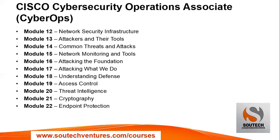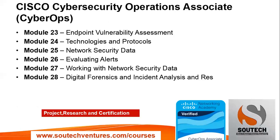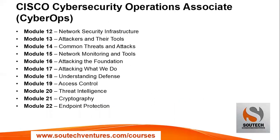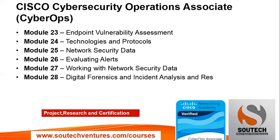Of course you have cryptography — we'll learn symmetric and asymmetric cryptography and how they play a role in confidentiality: making sure that whoever doesn't need to see something does not see it, including hiding files. Then endpoint protection, endpoint vulnerability assessment, technologies and protocols, and network security data. Module 26 is closely knitted to module 20 — from archived alerts we can forestall attacks. Then working with network security data, digital forensics, and incident response.